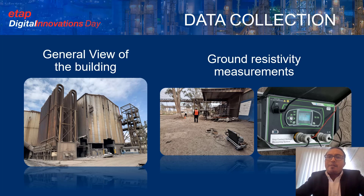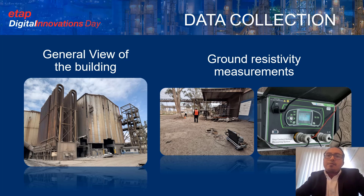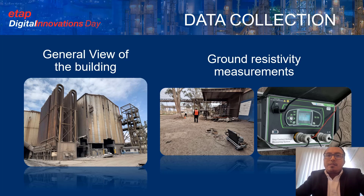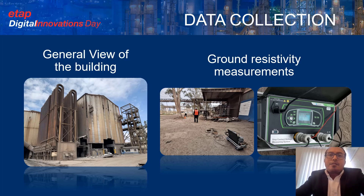In the first stage, we made the data collection. We needed to identify the area where we needed to build this new system. As you can see, this place was under very heavy working circumstances, and we needed to make all the ground resistivity measurements. We made all this real data in order to help us simulate the real characteristics of the area.